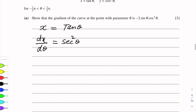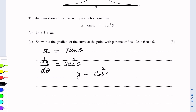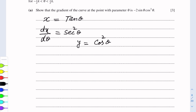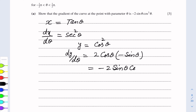For y equal to cos squared theta, we can write this as cos theta to the power 2. Differentiating with respect to theta: dy over d theta — the power 2 comes to the front, giving 2 cos theta to the power 1, multiplied by the derivative of cos theta which is minus sin theta. So this becomes minus 2 sin theta cos theta.